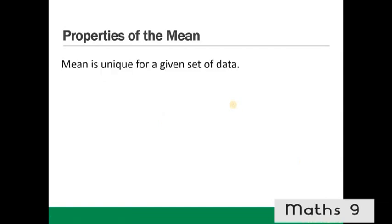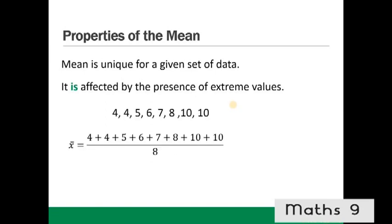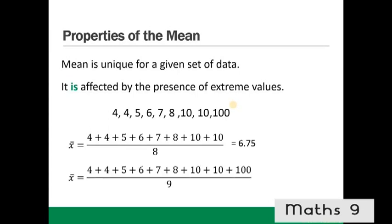Properties of the mean. The mean is unique for a given set of data, but it is affected by extreme values because it incorporates every single data point. For example, the mean of a dataset is 6.75. If an extreme value of 100 is added, the mean becomes 17.11 — much larger and no longer representative of most of the data.